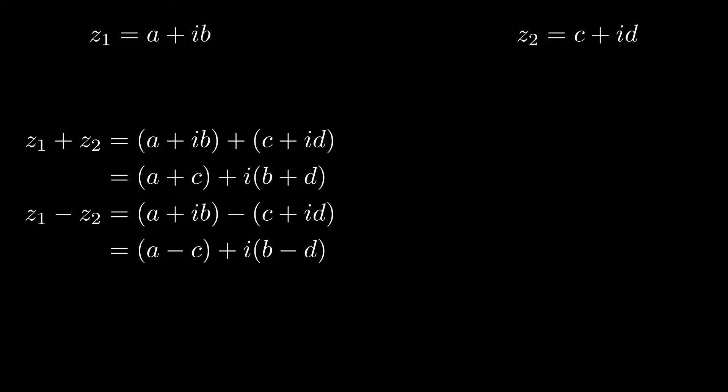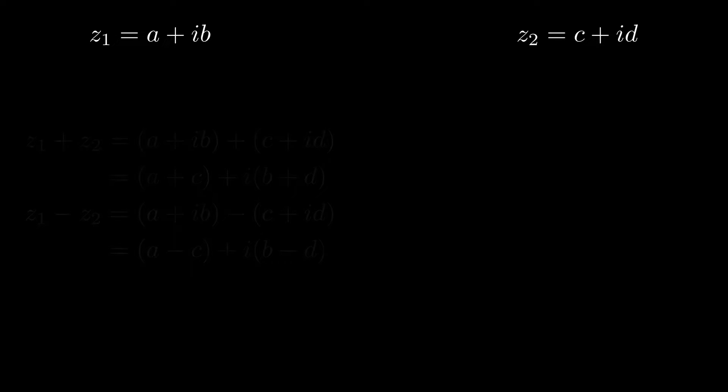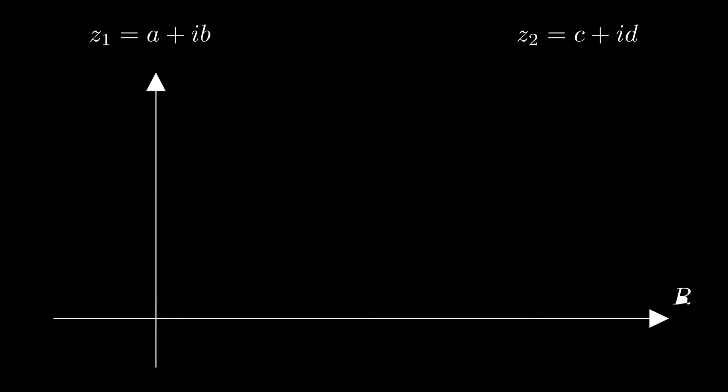Similarly, we can do the same thing for subtraction, but we can also do addition using vectors geometrically. Again, if I consider those two vectors z1 and z2 and I plot them on the argand plane, then I can move a copy of the vector z1 to the other end of z2. Similarly for z2, I can move a copy of z2 to the other end of z1 and this forms a parallelogram.